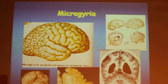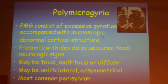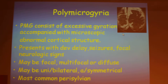Polymicrogyria is many small, excessive gyrations accompanied with microscopic abnormal cortical structures, and it presents with developmental delay and seizures. It may be focal or diffuse, and can be one-sided or both sides, symmetrical or asymmetrical, and most commonly seen in the perisylvian region.